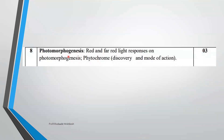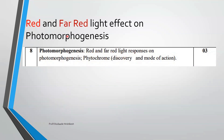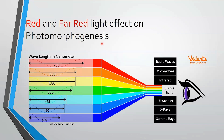As per the syllabus, photomorphogenesis is discussed in response to red and far red light. To understand this, you have to understand what red and far red light are. This is the visible spectrum — we have discussed deeply about the spectrum in the previous chapter. Blue to red are the visible spectrum portions detected by the eye, as shown by the eye picture here.